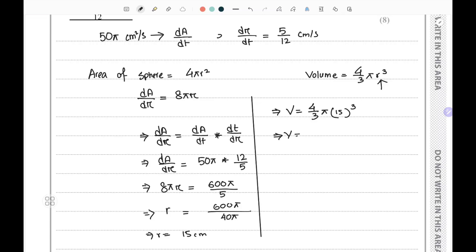3375 times 4/3, that is 4500π cm³, and this is our answer.